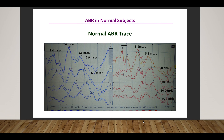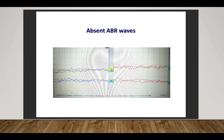This is a normal ABR. We can see identifiable, repeatable ABR waves down to 30 dB nHL, reflecting normal hearing in the frequency range 2 to 4 kHz. This is an example of absent ABR waves — no identifiable nor repeatable ABR could be traced at maximal stimulation of 90 dB nHL.